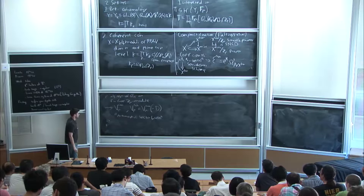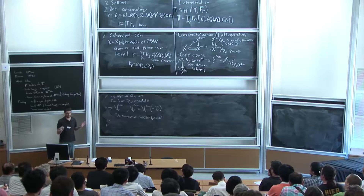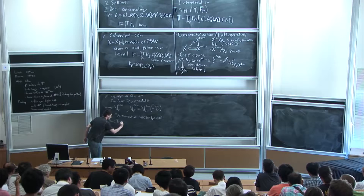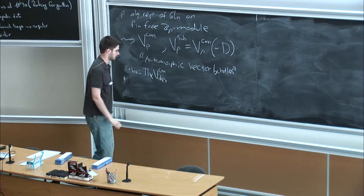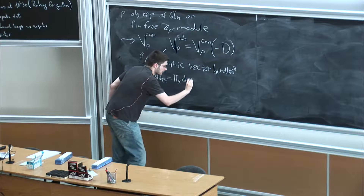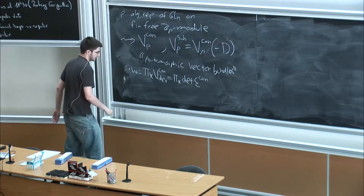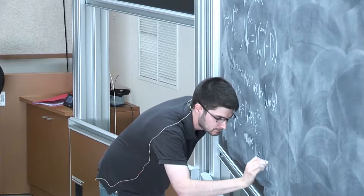One more bit of notation: I'll call π the map from the toroidal compactification to the minimal compactification. I want to consider ω to be the pushforward of the perfect vector bundle corresponding to the determinant representation — just another way of saying the pushforward of the determinant of the Hodge bundle. By the construction of the minimal compactification, this is an ample line bundle.